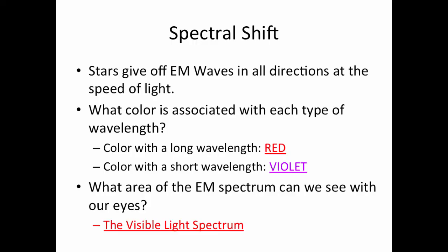What color is associated with each type of wavelength? Long wavelengths are red, and the shortest wavelengths are violet, so make sure you write that in your notes. What area of the EM spectrum can we see with our eyes? That's the visible light.